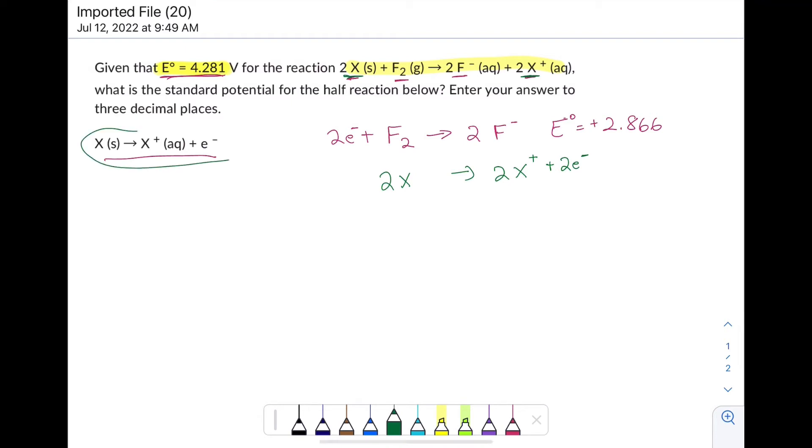I want to know, if I did look it up on the table, what would be the cell potential? Well, this is my unknown, but these two added together get me my total cell potential of 4.281 volts. So 2.866 plus question mark equals 4.281.